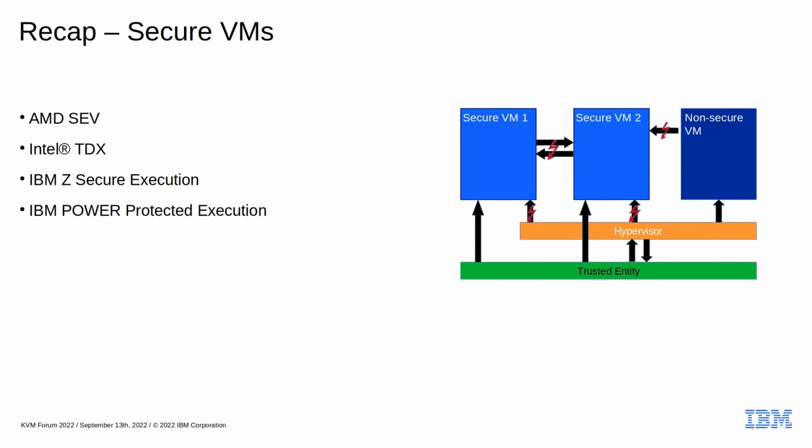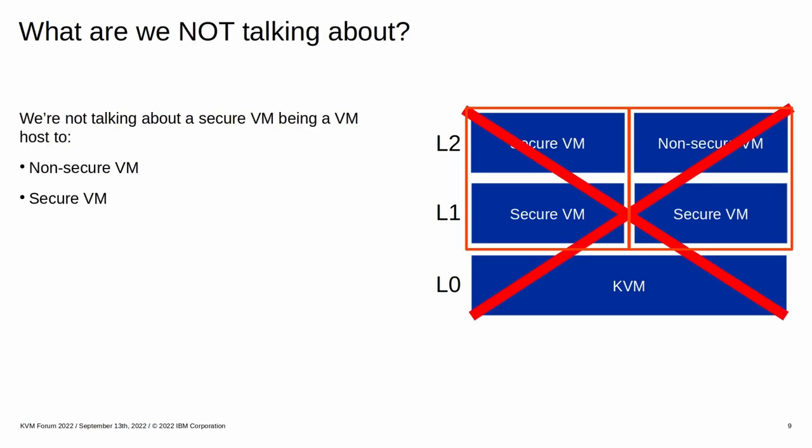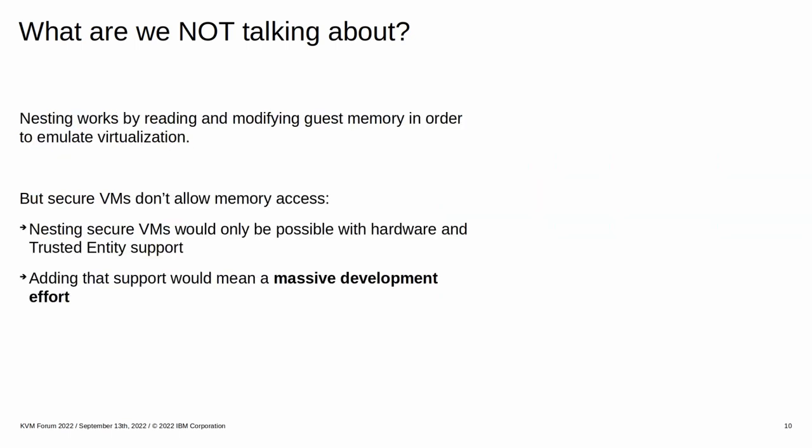Let's define what we are talking about today. Secure host nesting means that a KVM VM is a host to a secure VM, and a secure VM is being run as a nested guest. This talk is not about starting a VM from inside a secure VM, regardless of whether the level 2 VM would be secure or non-secure. Nesting works by reading and manipulating guest memory to emulate virtualization instructions, but a secure VM's memory can only be accessed by itself and a trusted entity, which means nesting is only possible with considerable hardware and firmware support.